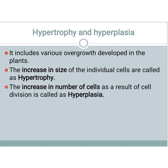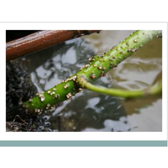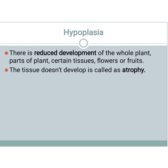Hypertrophy and hyperplasia occur due to overgrowth. Hypertrophy is the increase in size of individual cells — this is a very important objective question. Hyperplasia is the increase in number of cells as a result of cell division. You must be clear on these two definitions as they are frequently asked objective questions. You can see the hypertrophy symptom in this picture.